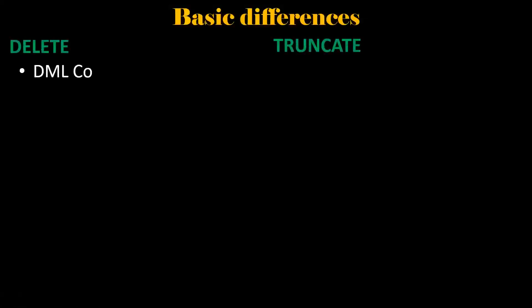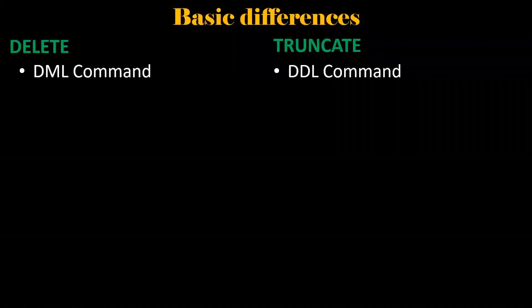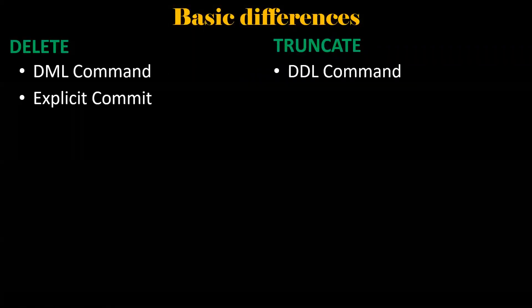The first difference is that DELETE is a DML command — Data Manipulation Language — whereas TRUNCATE is a DDL command — Data Definition Language. Explicit commit is required after performing a DELETE operation, whereas TRUNCATE is auto-committable.